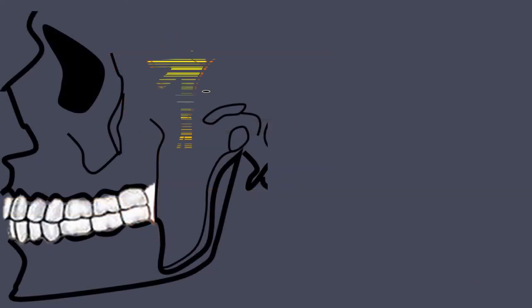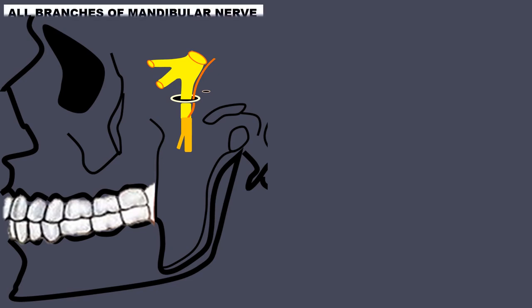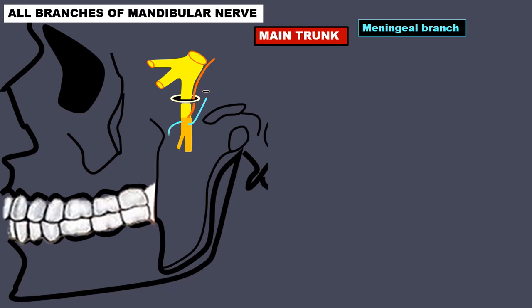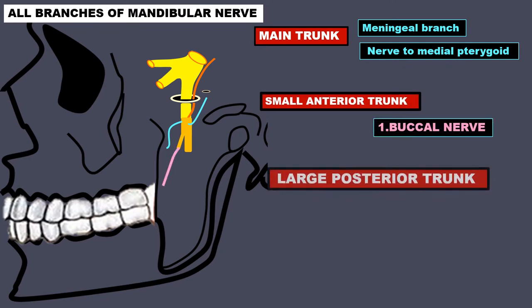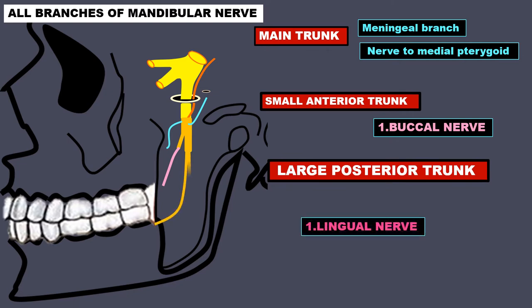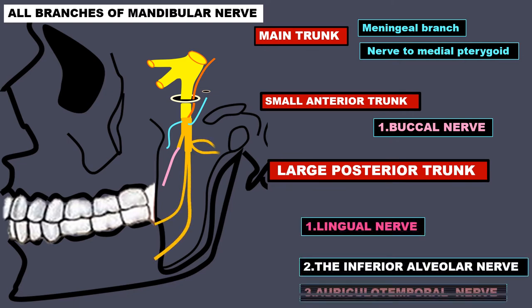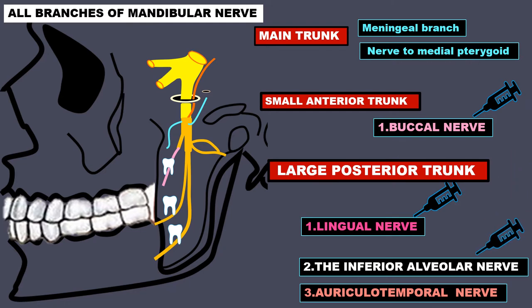Let us take a look at all the branches of the mandibular nerve. Coming out from the main trunk going up is the meningeal branch, and going down is the nerve to the medial pterygoid. The main trunk then divides into the small anterior trunk, which gives rise to the buccal nerve. The large posterior trunk gives rise to: one, the lingual nerve; two, the inferior alveolar nerve; and three, the auriculotemporal nerve. The buccal nerve, lingual nerve, and inferior alveolar nerve are important clinically because these are the nerves blocked for extraction of teeth and for other minor surgical procedures in the mandibular area.